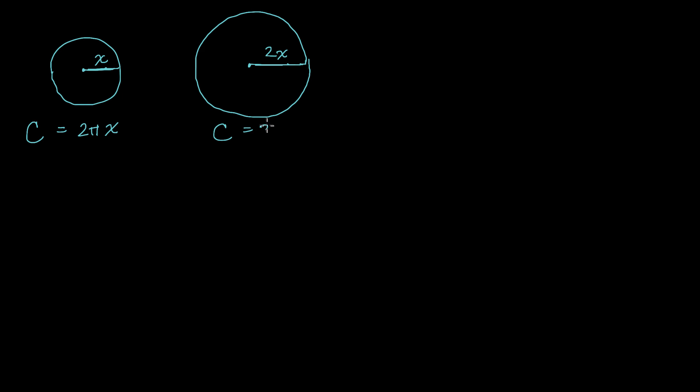Well what's the circumference here? Well once again the circumference is equal to 2π times the radius, but this time the radius is 2x. So the circumference is equal to 2 times π times 2 times x, which is 4πx.